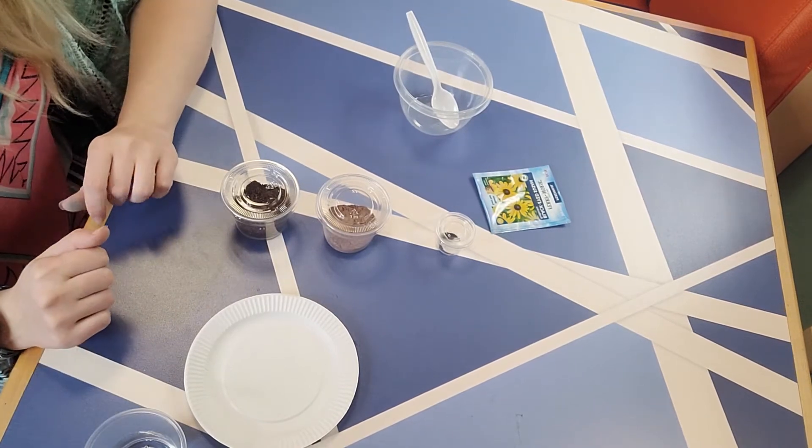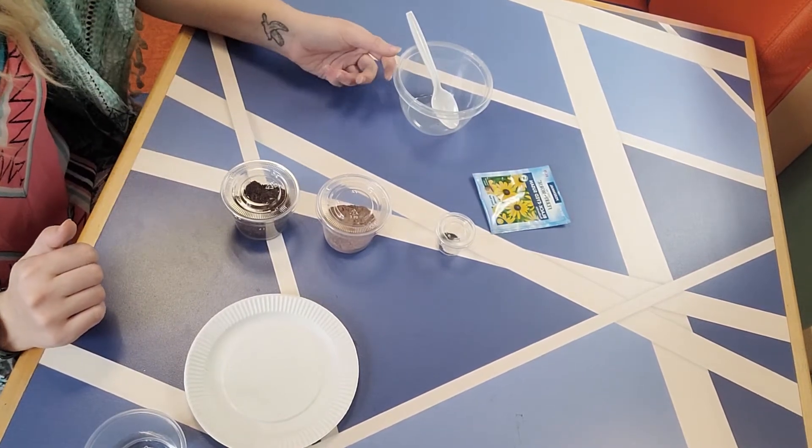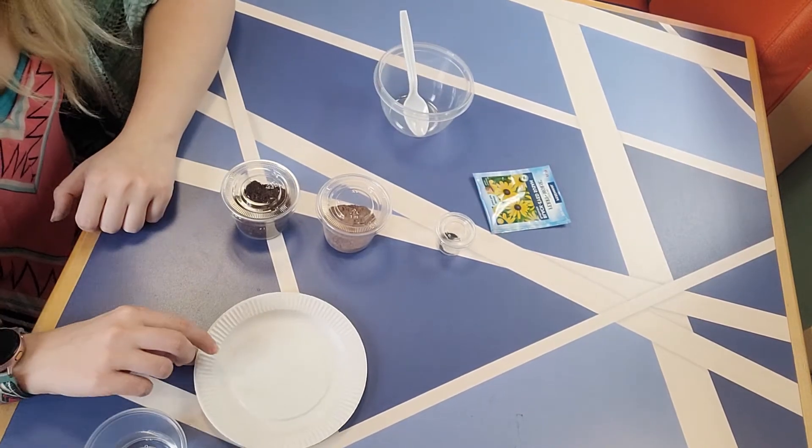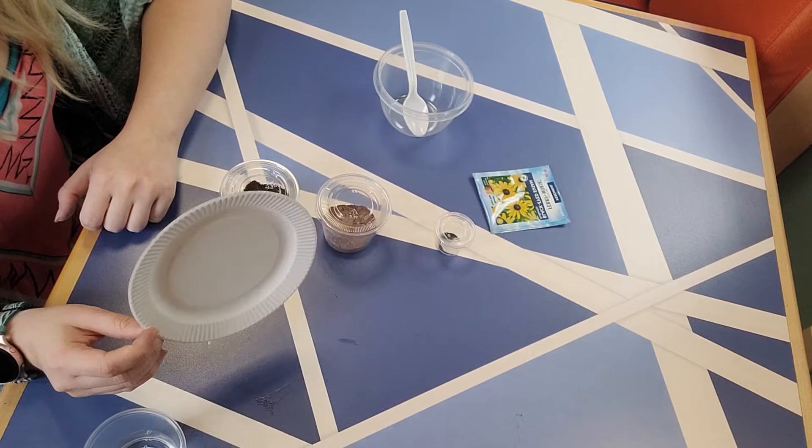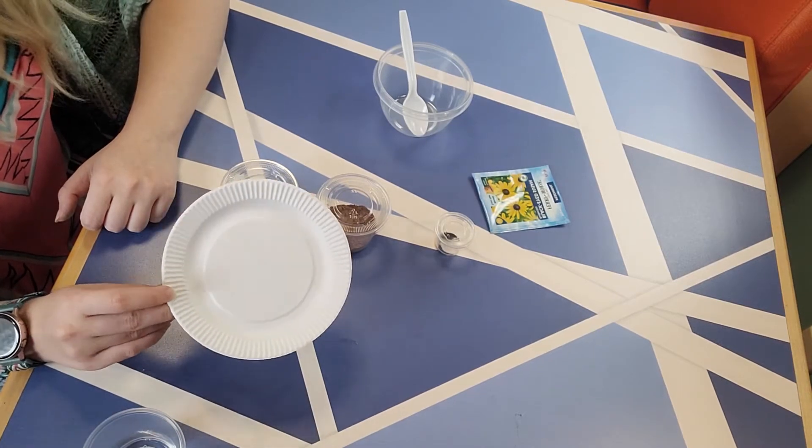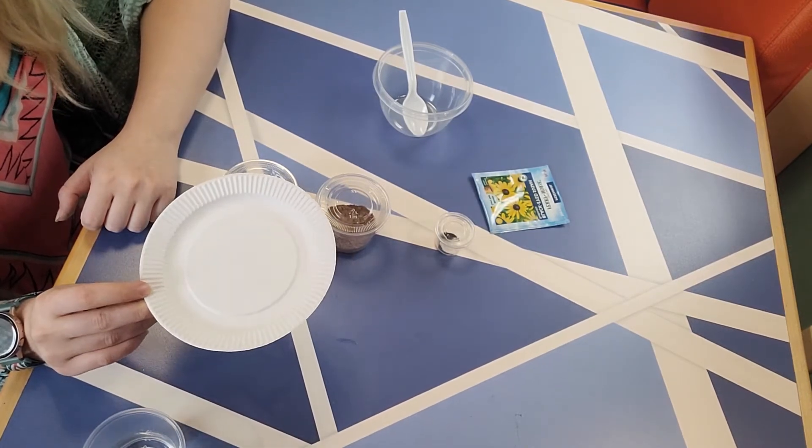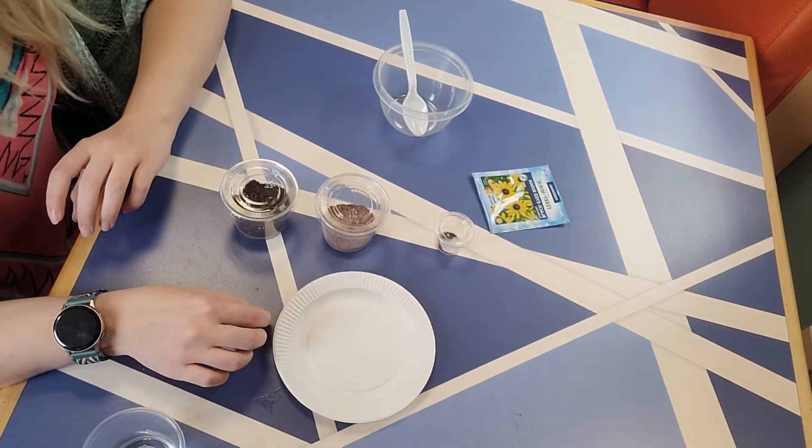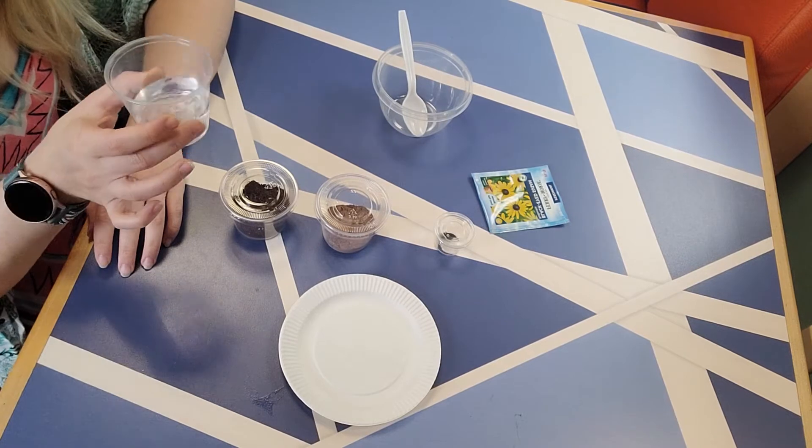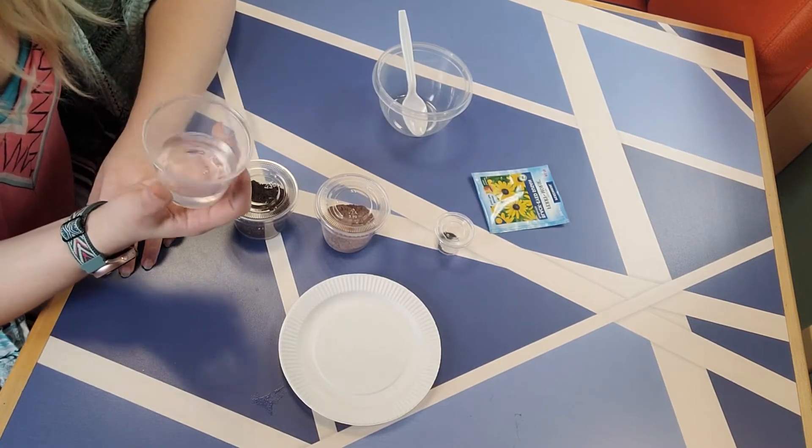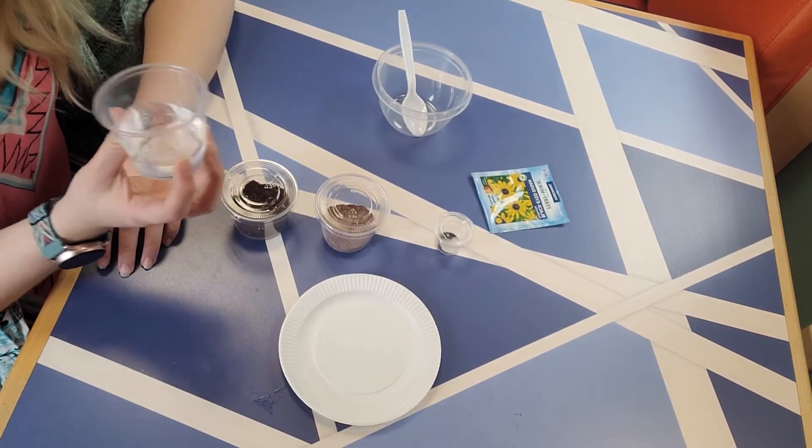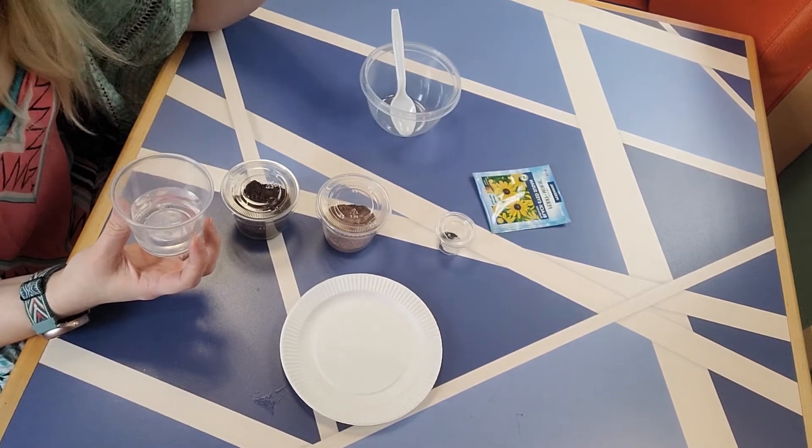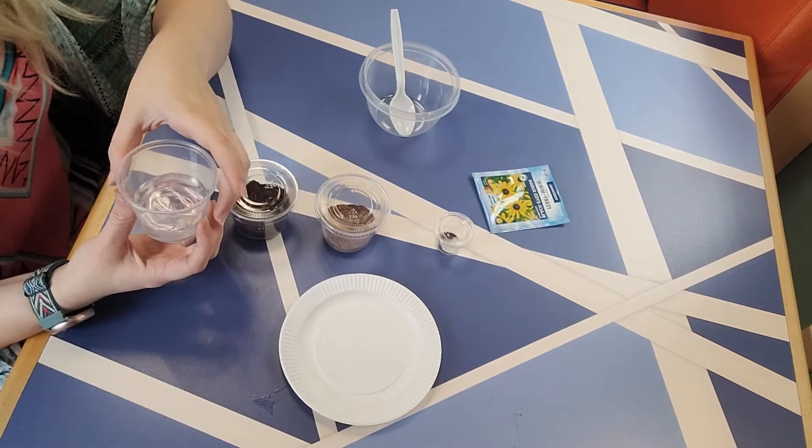Some things that you're going to need to get on your own are a mixing bowl and a spoon, a plate or a baking tray with parchment paper on it or something to line your formed bombs out to dry. And then you're going to need some water. And there's no exact measurement of how much water you're going to need. You're going to kind of have to feel your mixture and see how it is forming.